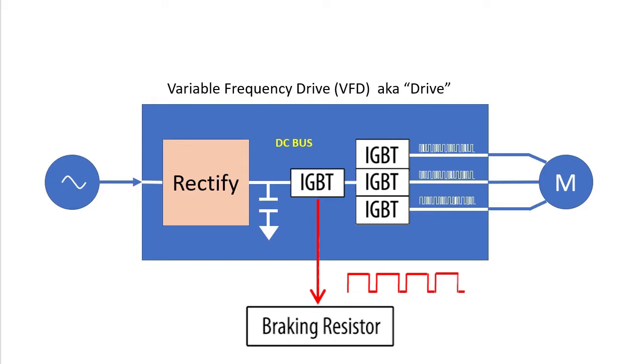Dynamic braking uses a fourth IGBT circuit to regulate the current flow to the resistor using the same chopping method. Wide pulses send lots of current to the resistor, narrow pulses send a little. Dynamic braking is a great way to get fast deceleration times and WEG drives make it easy to do.